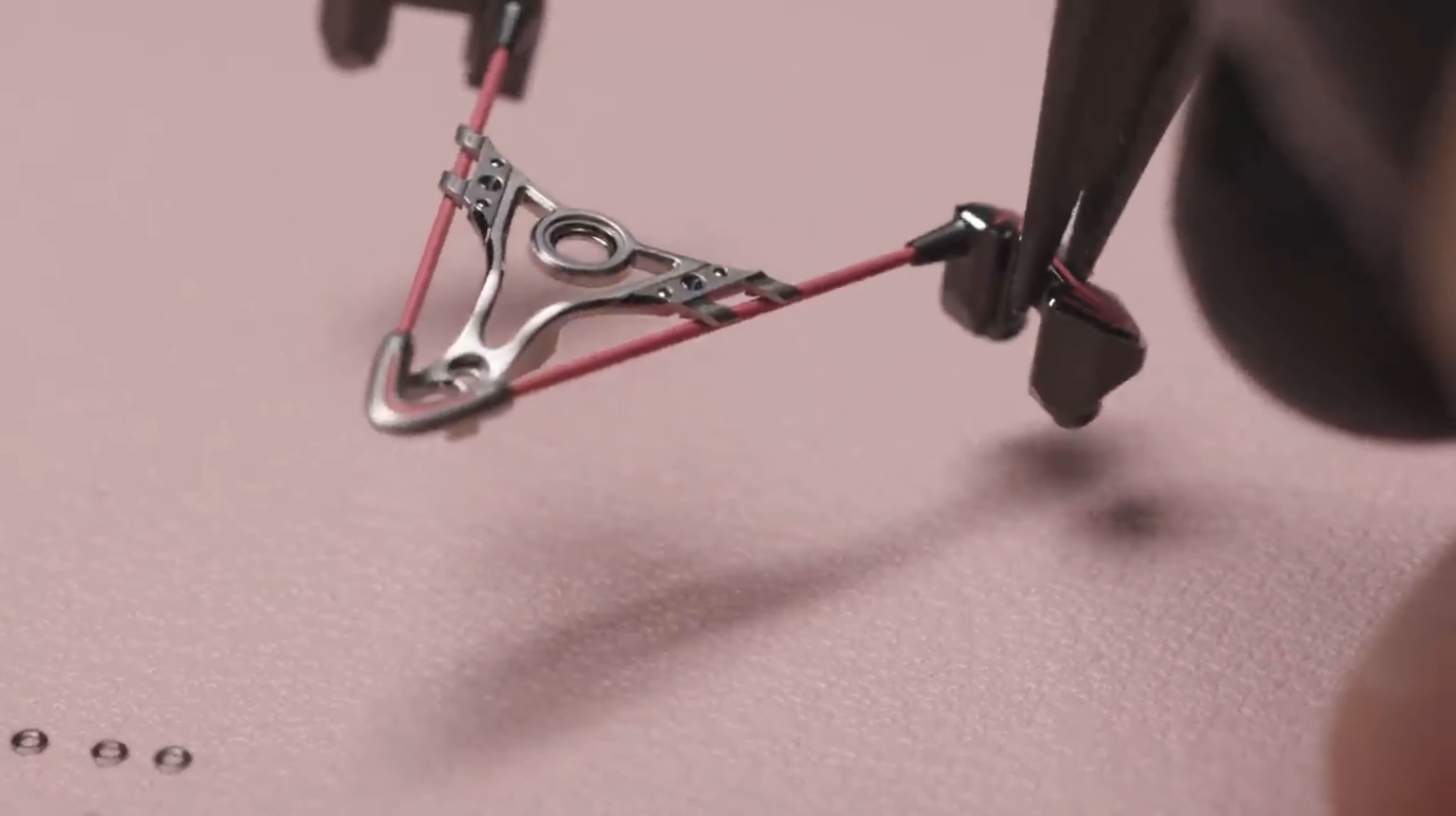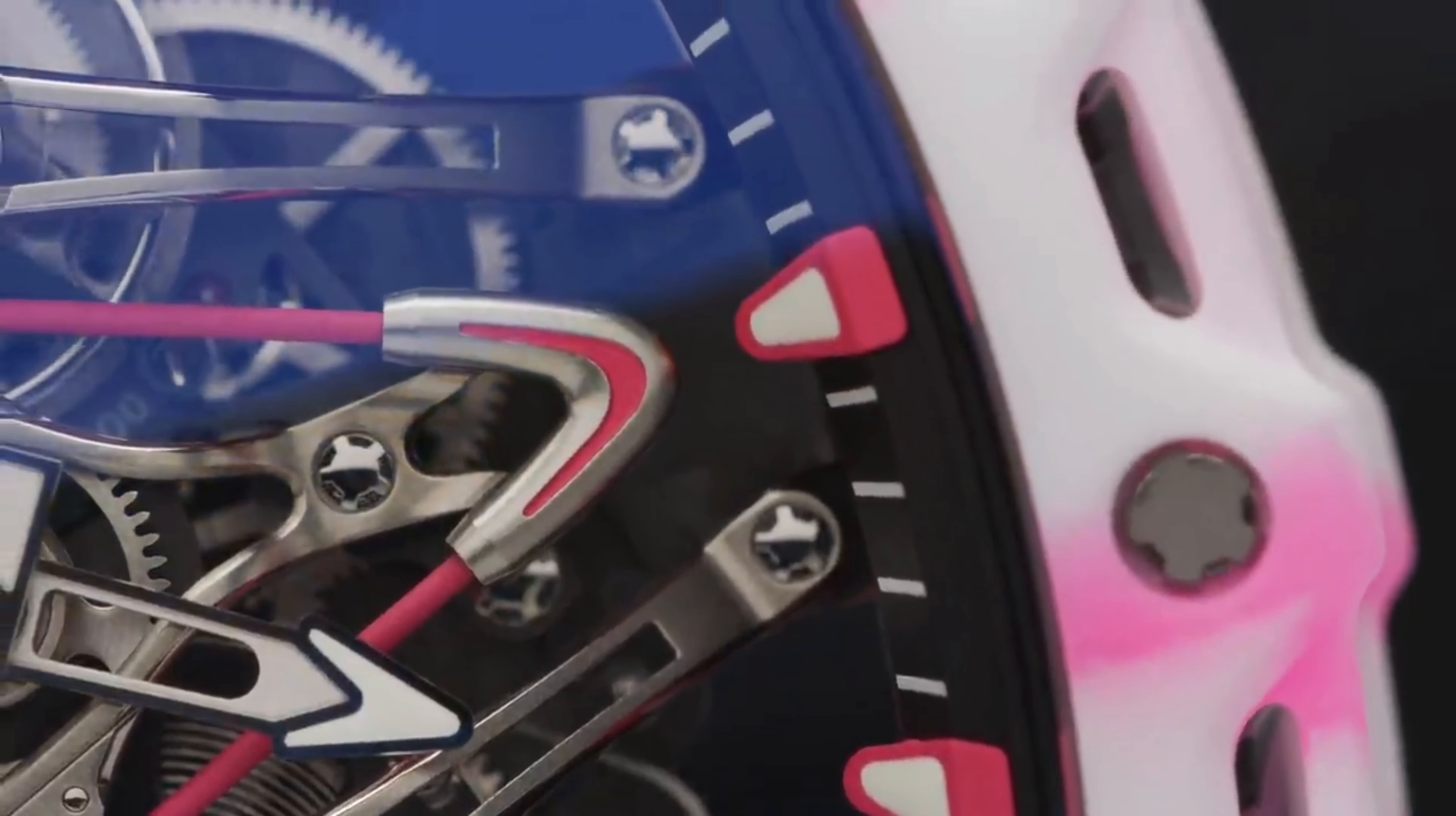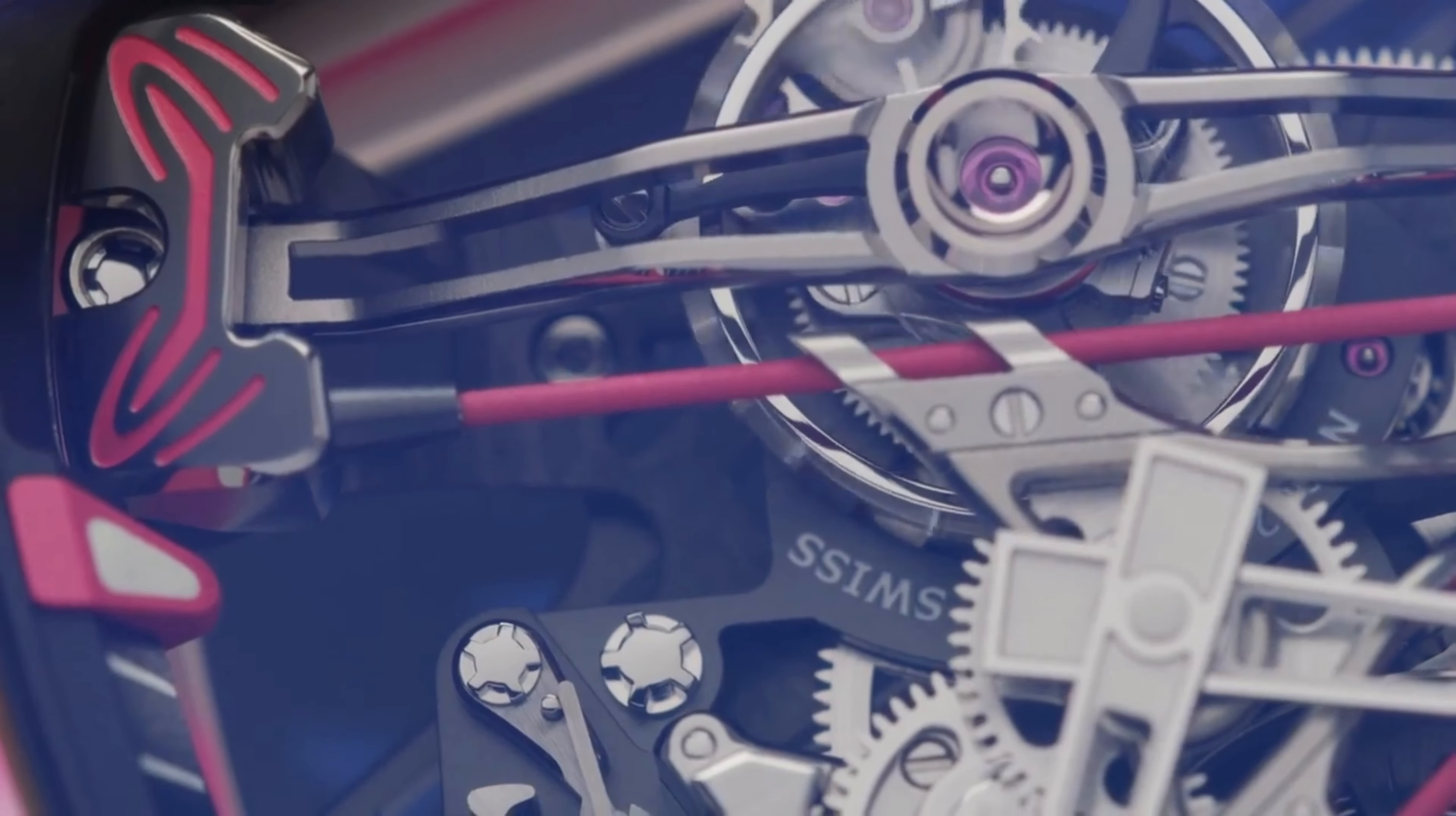The open work bridge incorporates two tubes that pass through the movement on either side. In grade 5 titanium and hand painted in Bubba's pink, they further accentuate the general lines of the calibre.